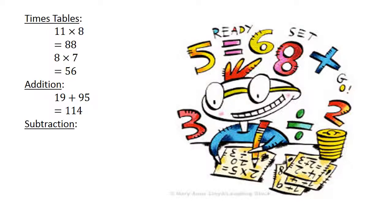Subtraction. Fifty-one minus ninety-six equals negative forty-five.